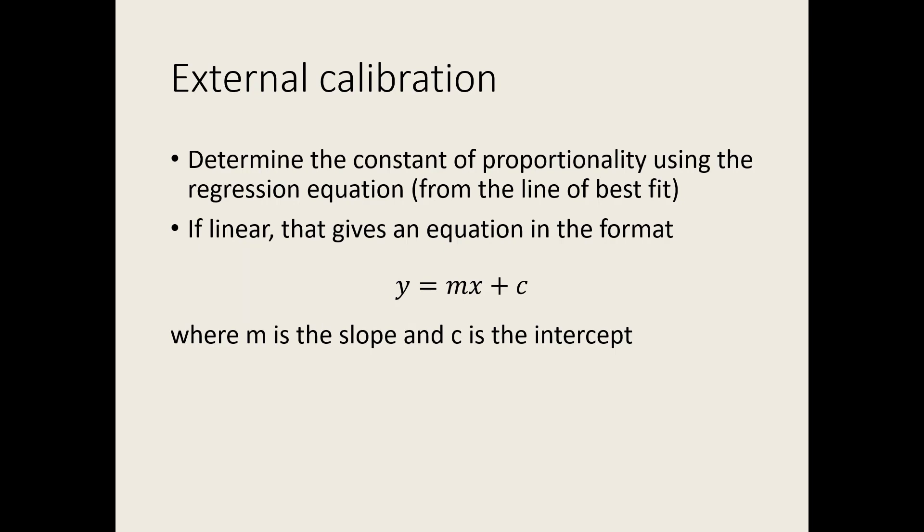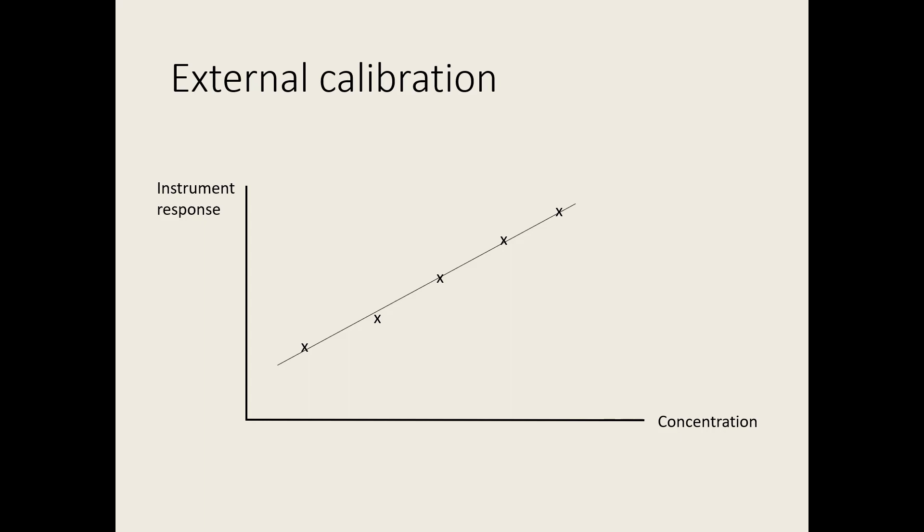Because the graph is a straight line, it can be represented by the general equation for a straight line, y equals mx plus c. X and y represent whatever is plotted on the x and y axes. m is the slope and c is the intercept where the line crosses the y-axis. The equation gives us the mathematical relationship between x and y, which we can then use to calculate the value of concentration if we measure the instrument response for the unknown.